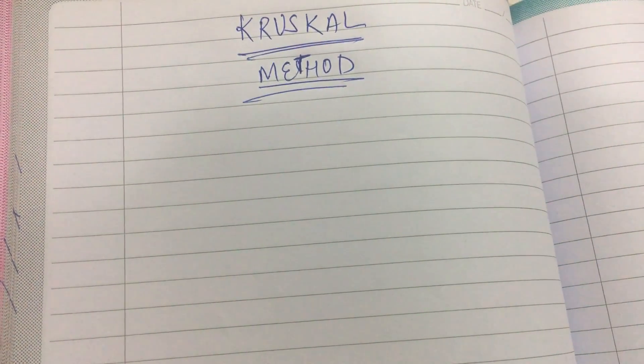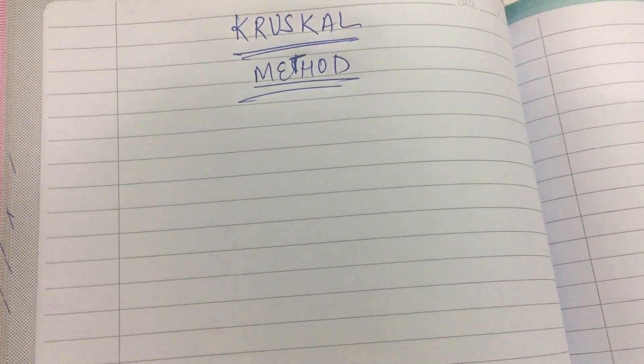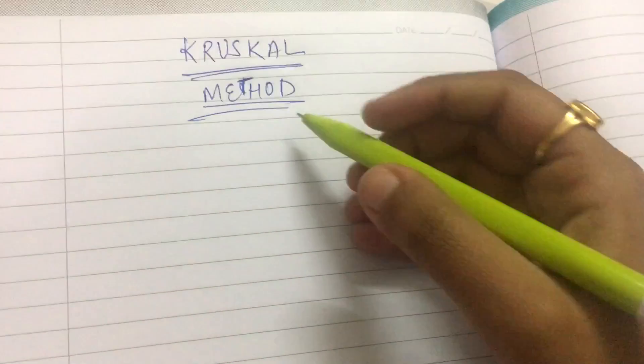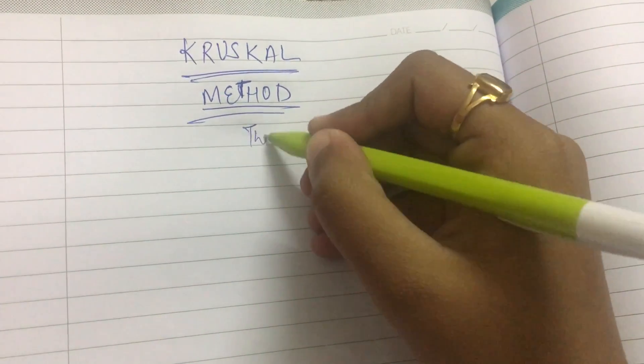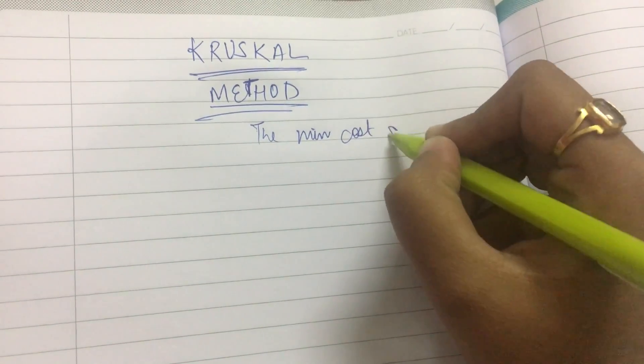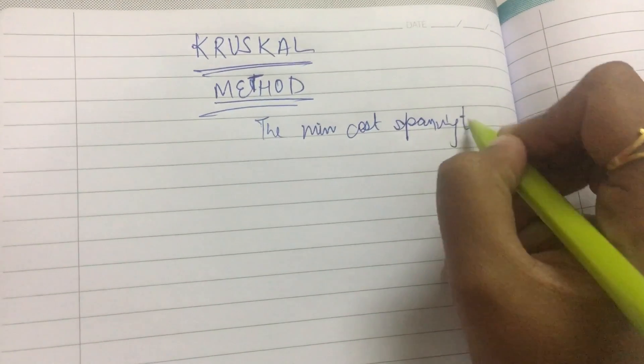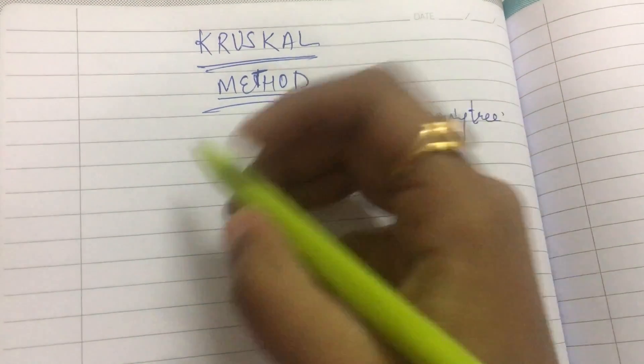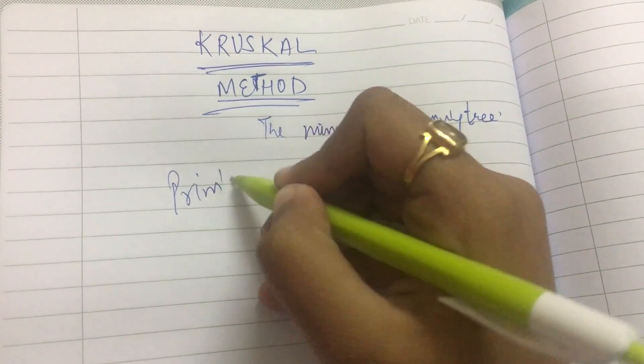Hello everyone, today we are going to study the Kruskal method. Kruskal method is for finding out the minimum cost spanning tree and it comes under the greedy algorithm. Another algorithm that we did was the Prim's algorithm to find the minimum cost spanning tree.